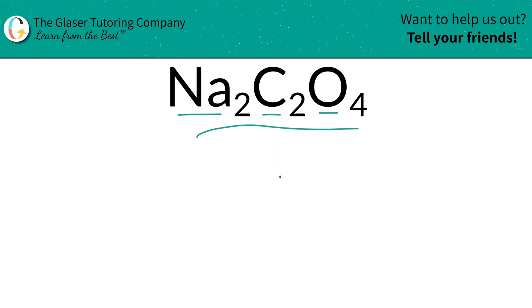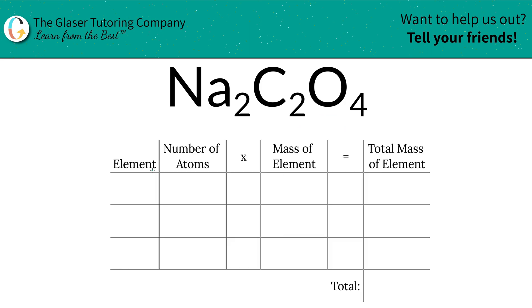I have a nice little table to help us out. The first thing is we're going to find the total mass. So the first step is we're going to write the elements that we see. So we've got sodium, carbon, oxygen.